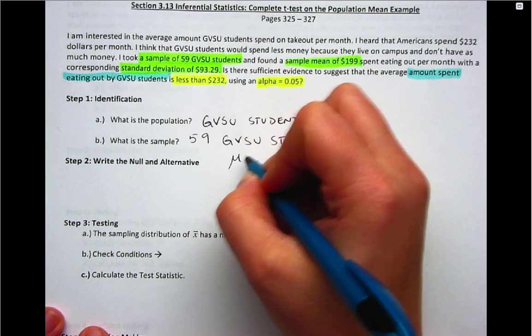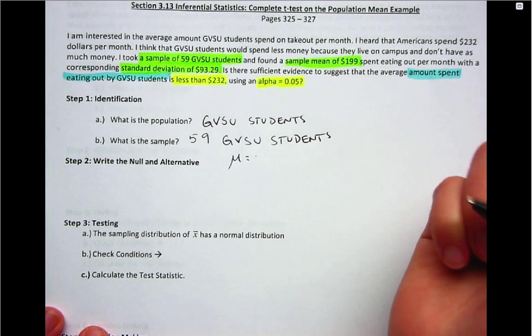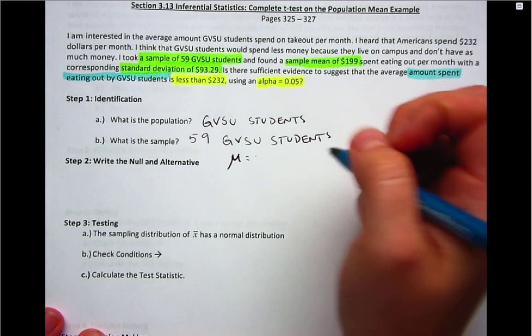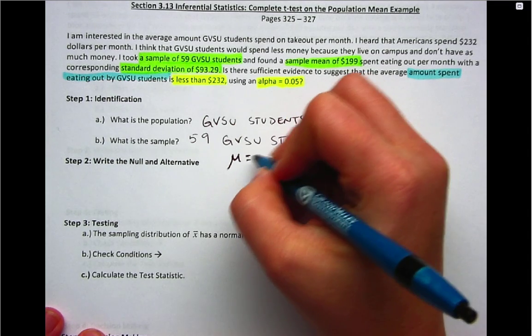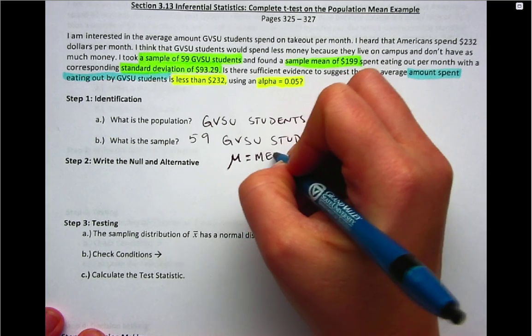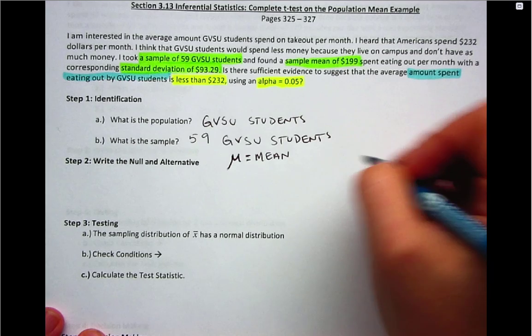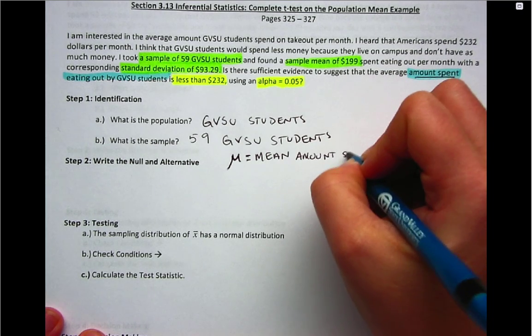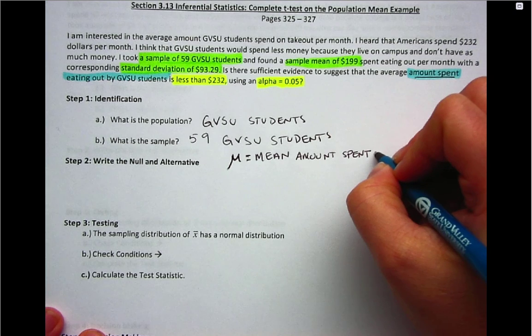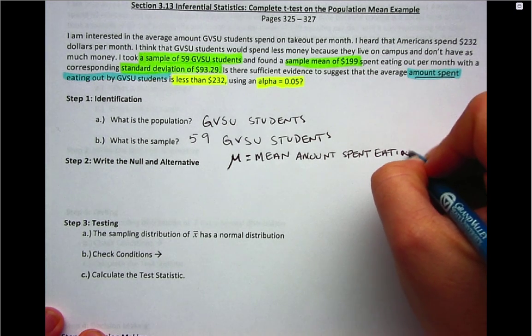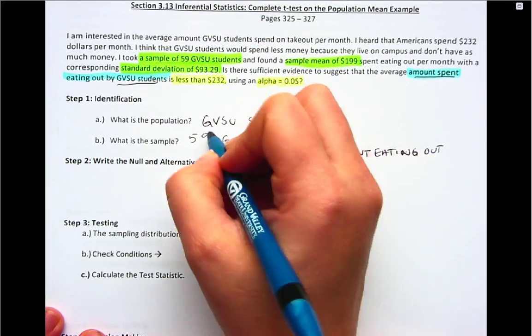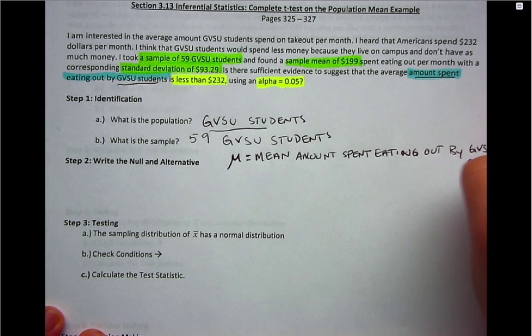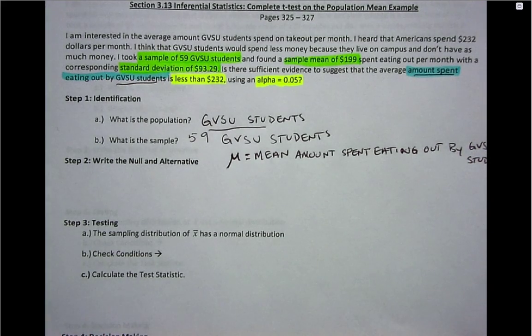Then the sample is going to be 59 GVSU students that were sampled. As I've said in videos past, I like to include a parameter definition because it helps me to make my inference down in step five. Right now, because we're talking about the analysis of one quantitative variable, our parameter or the notation for it is mu. Mu refers to a population mean, so we start with mu equals mean, and then we state the variable that we're measuring. Here, as we saw up top, it's going to be mean population amount spent eating out, and then we want to state the population, which we've identified twice as being GVSU students.